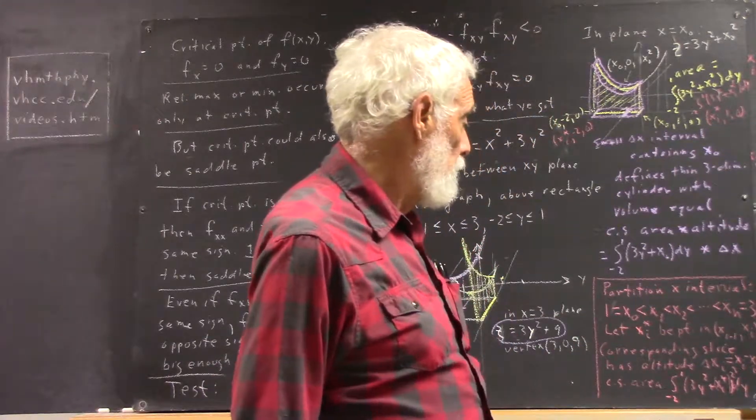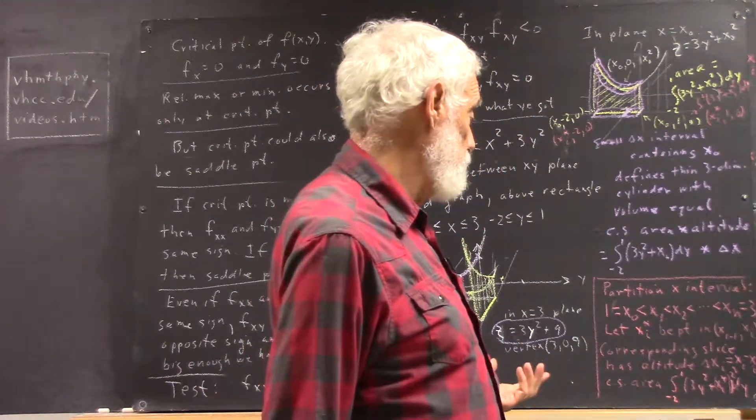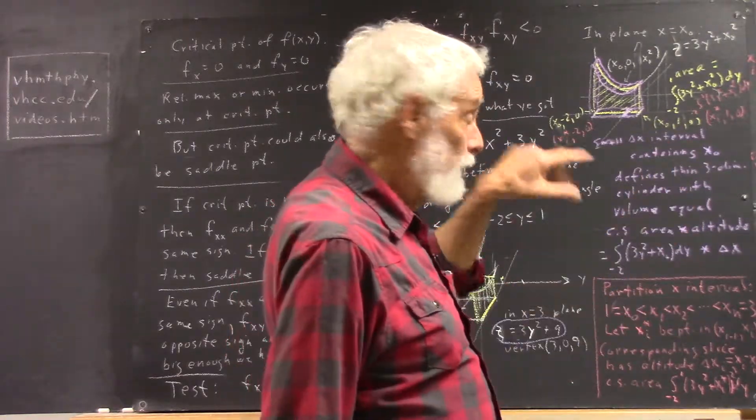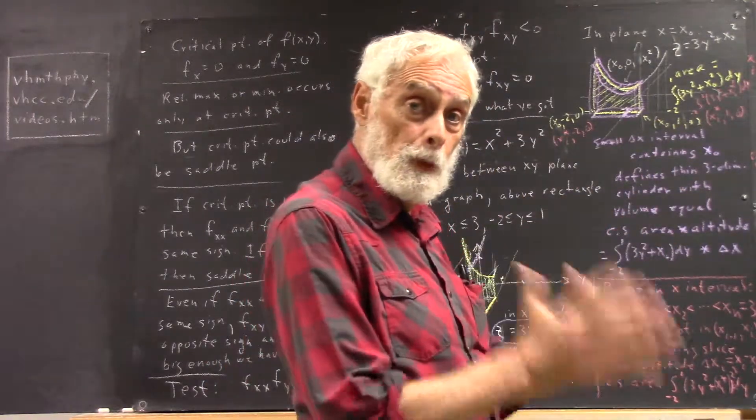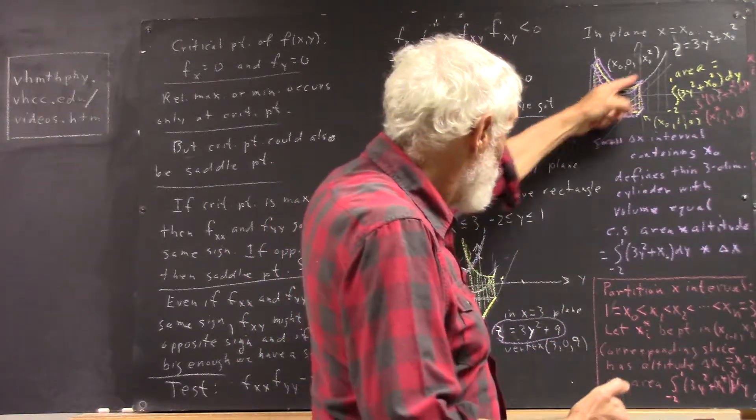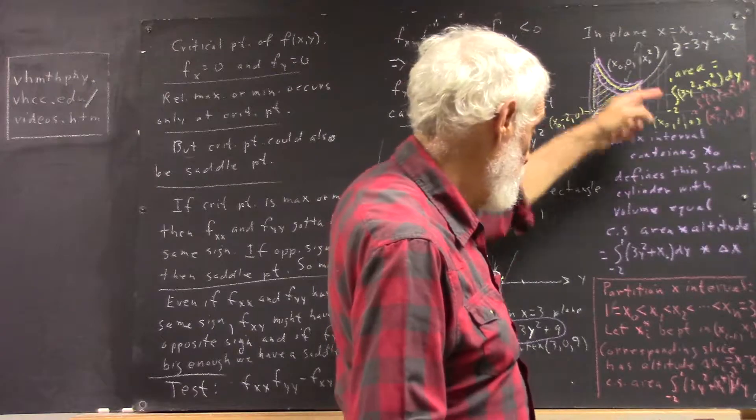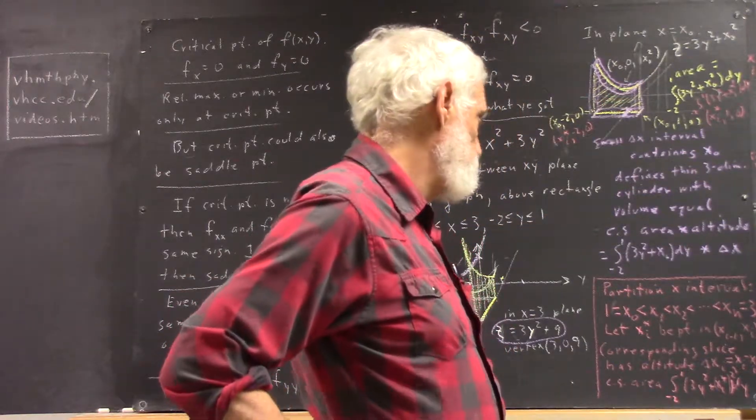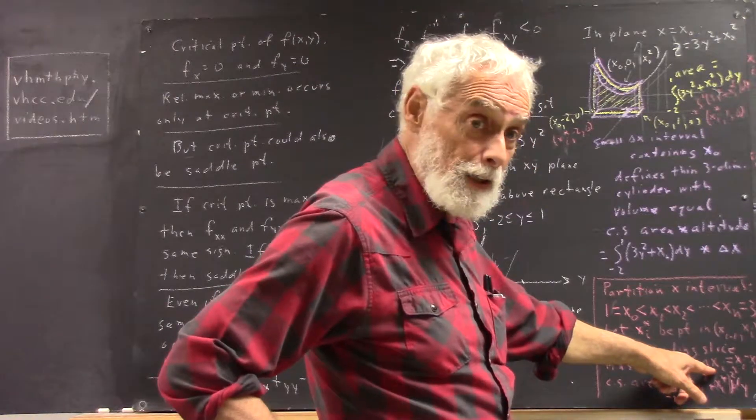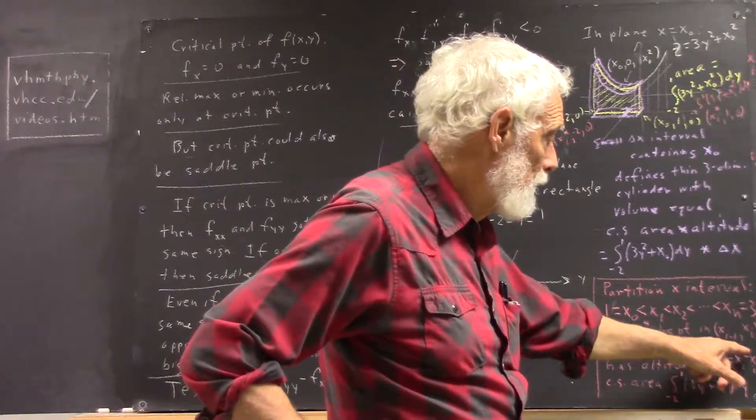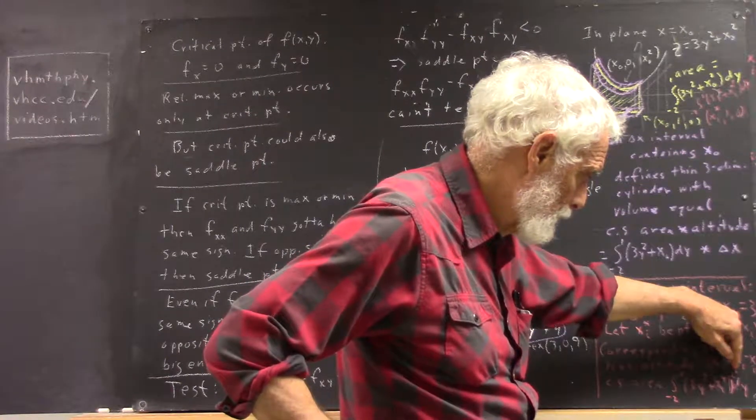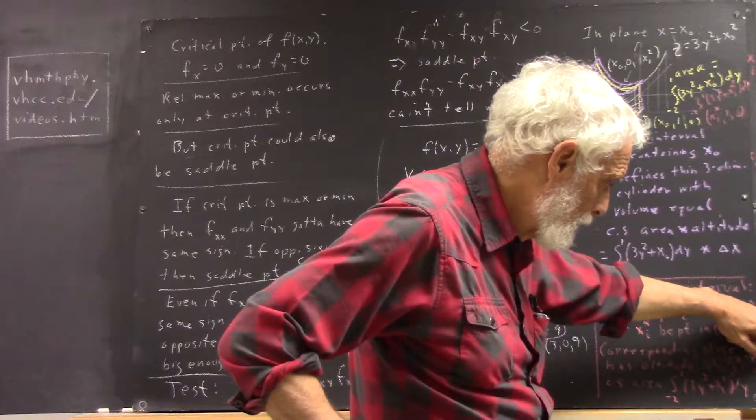And that's the value of x at which we're going to evaluate everything for each interval. Well then, the corresponding slice has what altitude? Remember, altitude doesn't necessarily go this way. In this case, altitude goes perpendicular to your uniform cross-section, which is going to be this way, in the x direction. So your slice has an altitude delta x_i, which is x_i minus x sub i minus 1.